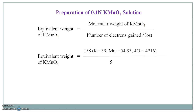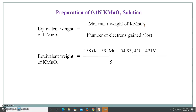The molecular weight of potassium permanganate is 158. Molecular weight is the summation of atomic weights of atoms present in a molecule. Here, potassium has atomic weight 39, manganese has atomic weight 54.93, and oxygen has atomic weight 16. Since 4 oxygen atoms are present, you multiply 16 by 4, and after summing all atomic weights you get the value 158.